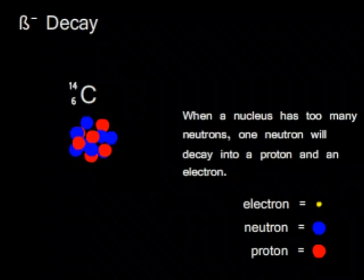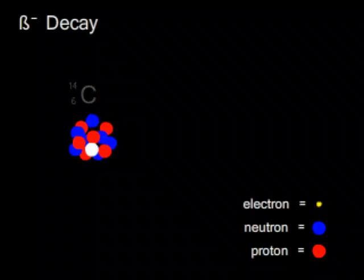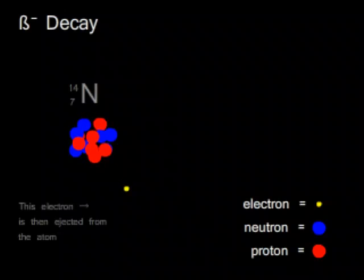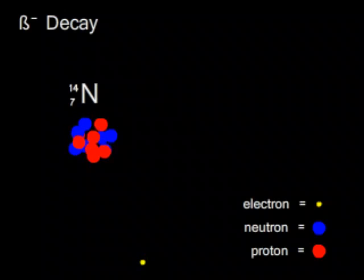When an isotope has too many neutrons, beta minus decay occurs. A neutron turns into a proton and an electron. Gamma rays are emitted, as usual.